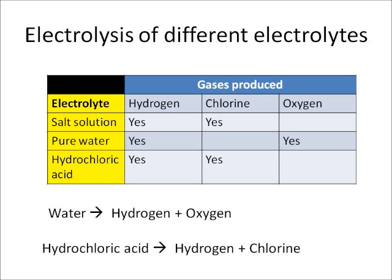Below that we have two examples of word equations which we can write for these reactions. Water is electrolyzed and broken down to produce hydrogen and oxygen, whereas hydrochloric acid is broken down to form hydrogen and chlorine.